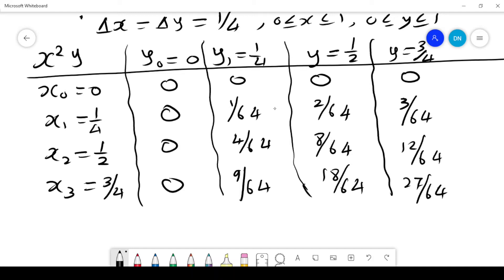When x is a quarter and y is a quarter, it is a quarter squared for x times a quarter for y, which is 1 over 64. At this point, it will be a quarter squared for x and for y is a half, so it will be 1 over 16 times a half, which is 1 over 32, or 2 over 64.